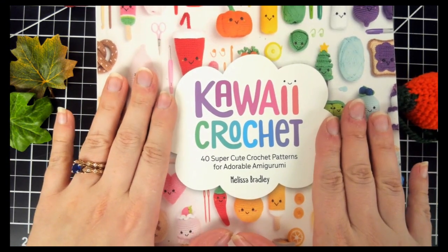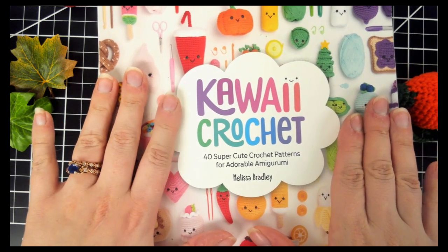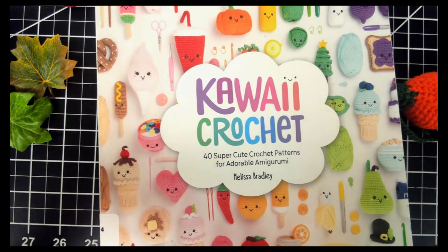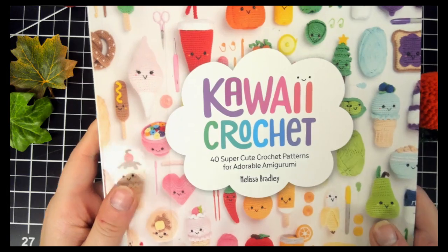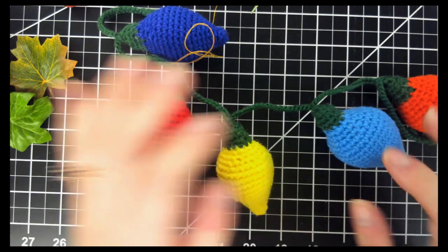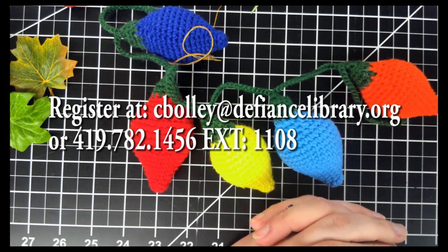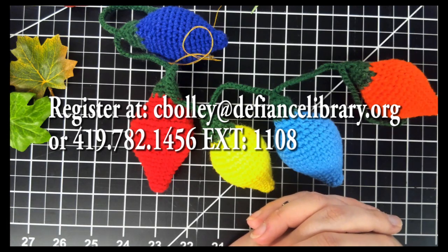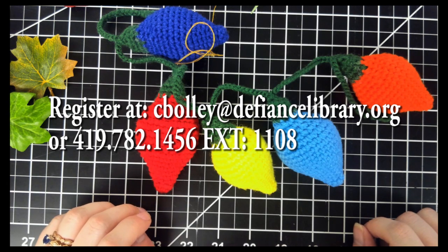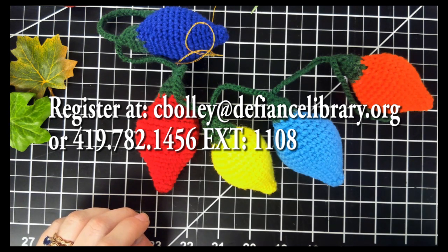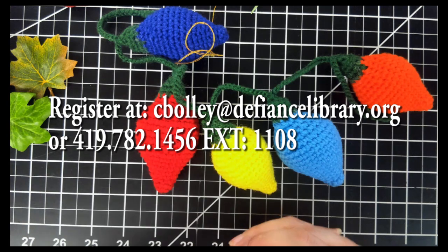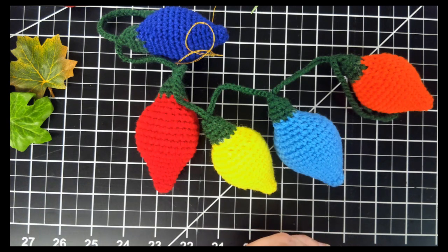And we will have these books available to check out in the library. There is a limited number of these. But it is also available on Hoopla, which you can do on demand. And there are a lot of copies of it that way. And that just gives the instructions on how to do it that we'll be following that night. So you can register at C-B-O-L-L-E-Y at DefianceLibrary.org. Or you can call 419-782-1456 extension 1108. And register that way. You can also contact those number and email if you are interested in using any of our makerspace equipment.